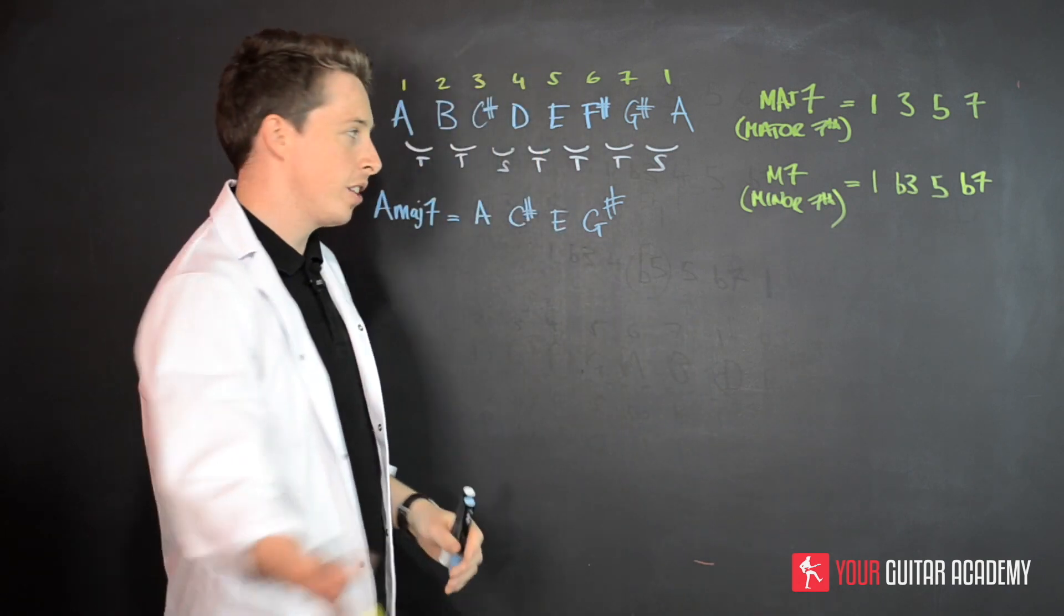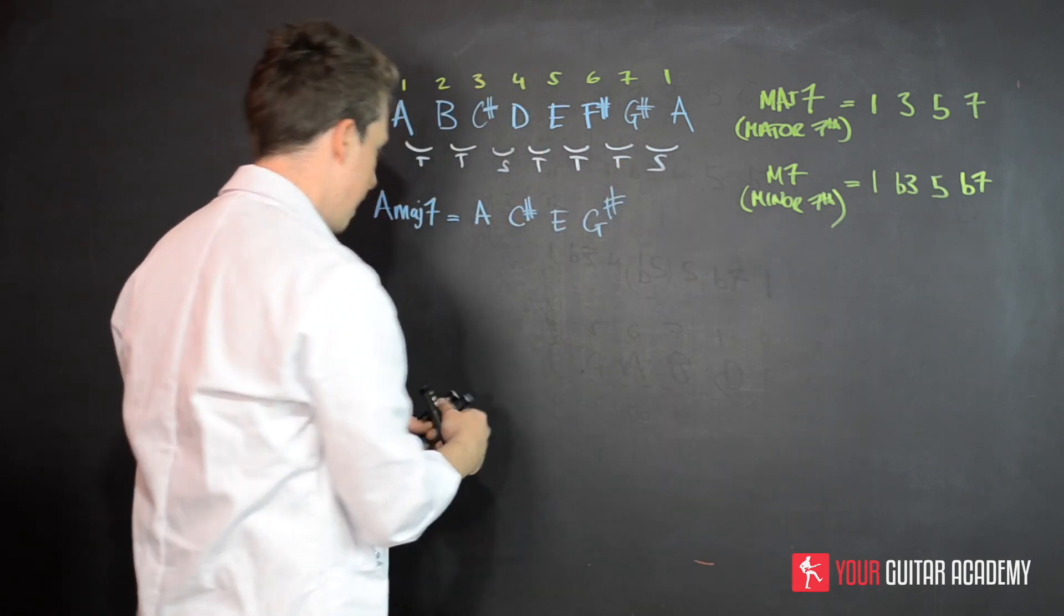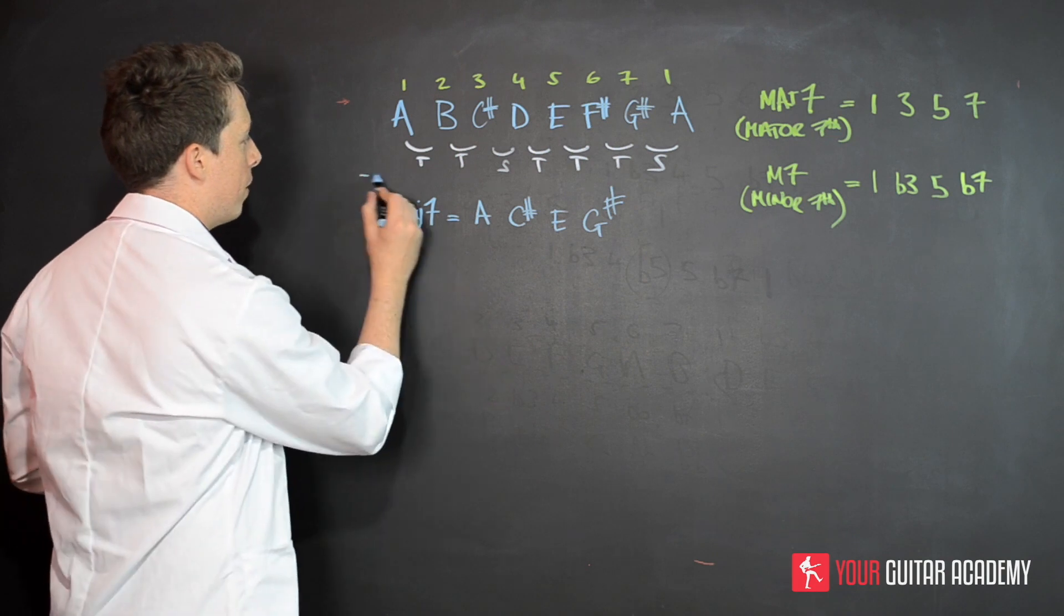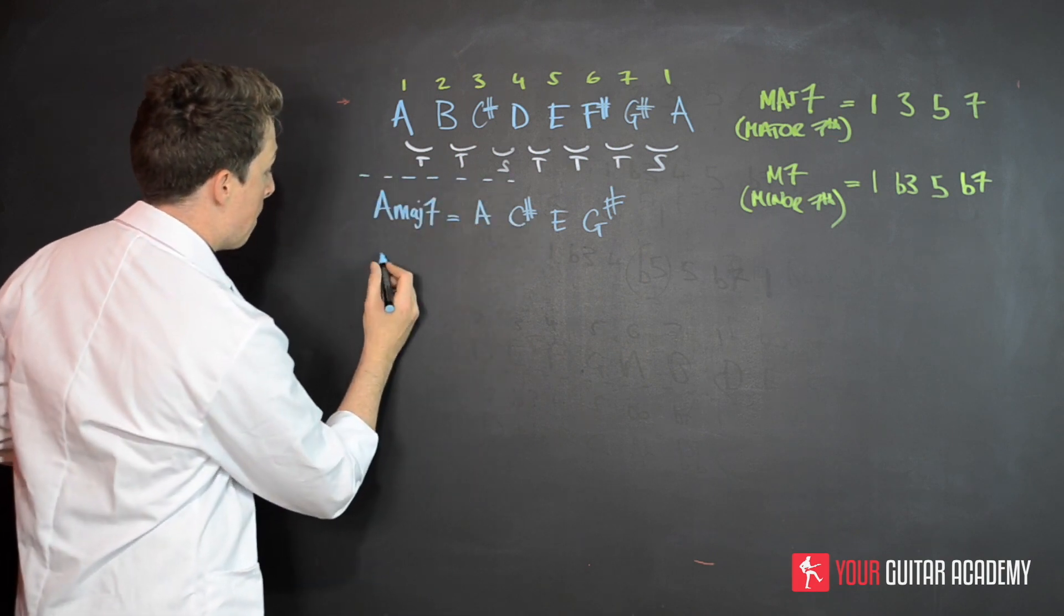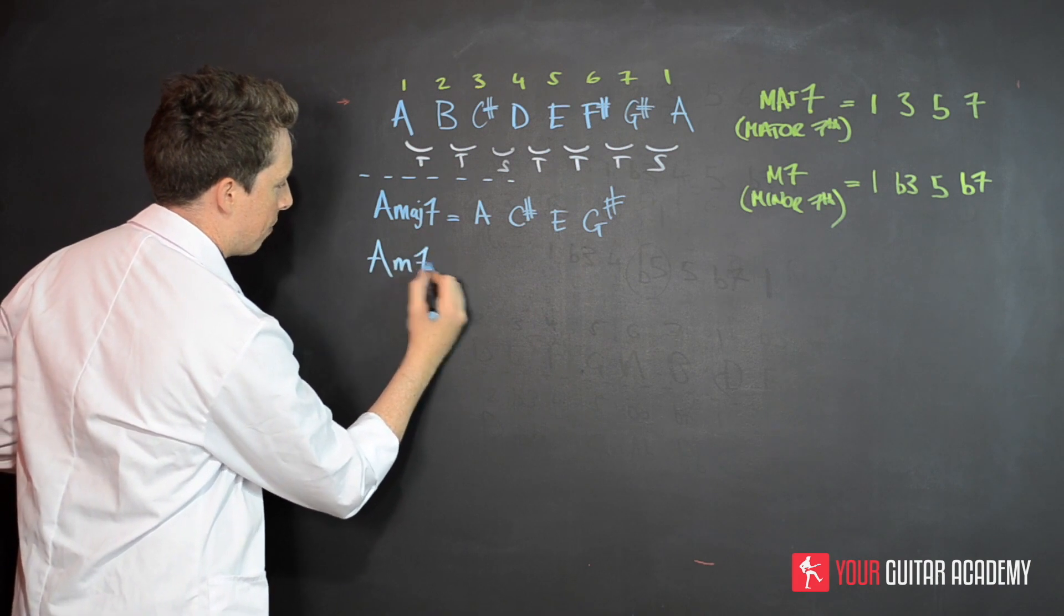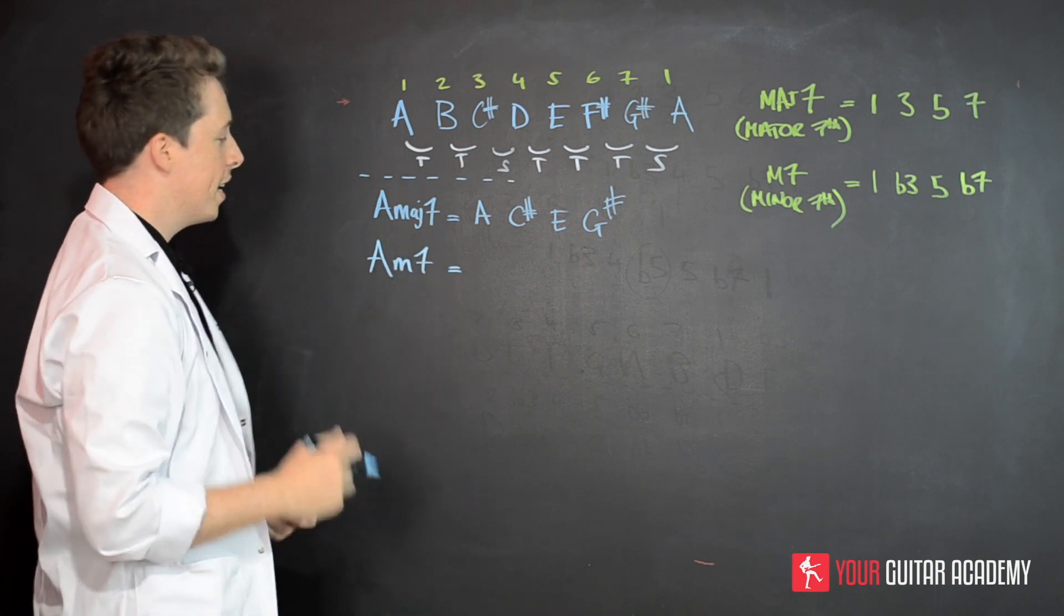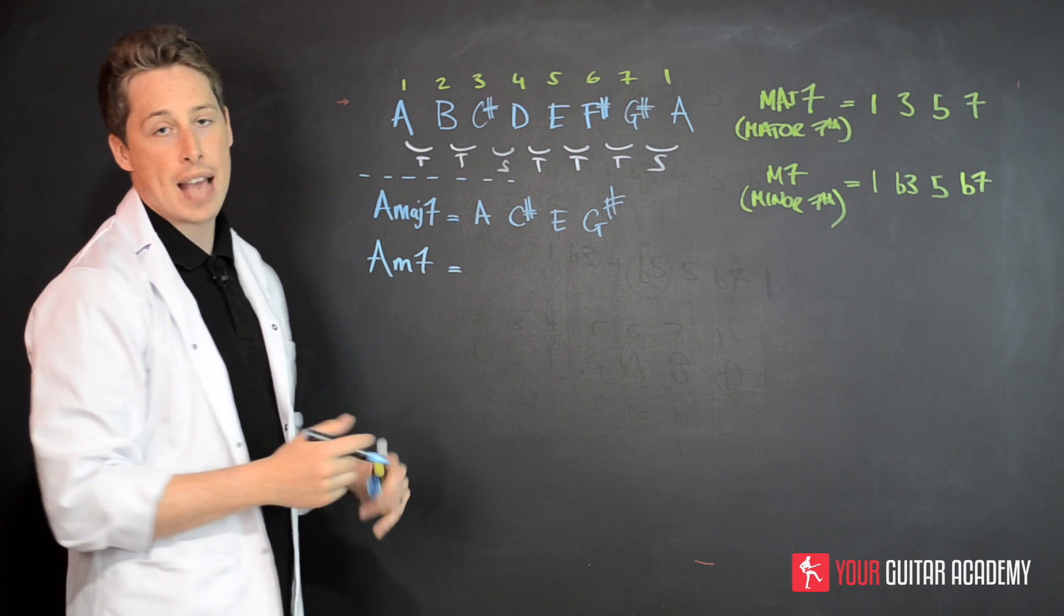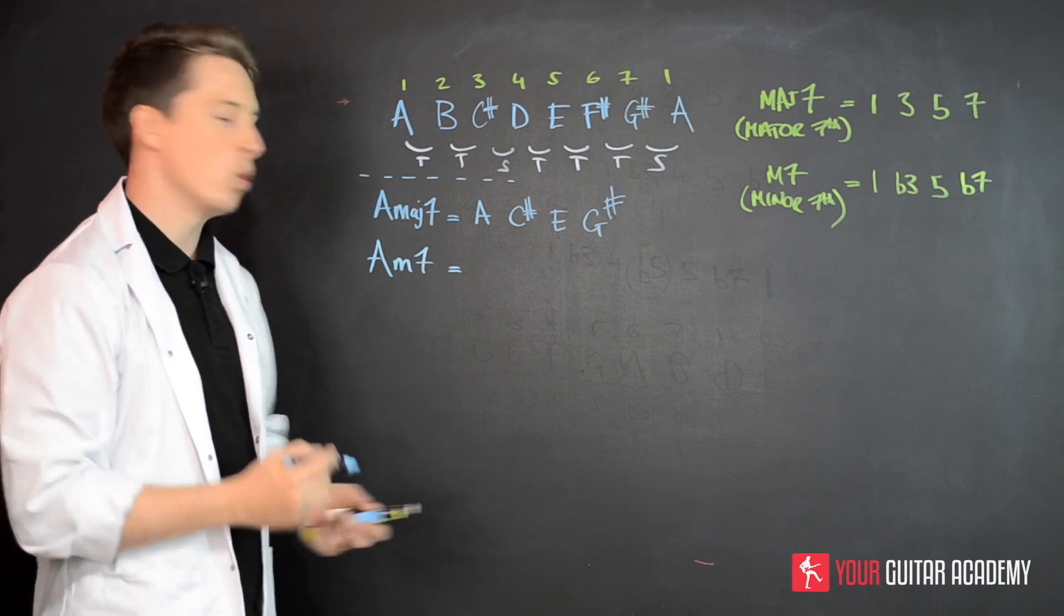So with that in mind, let's come over here and create ourselves the A minor seven. So A, M, seven. That's how you're going to see very commonly A minor seven written out on a chord chart, for example.